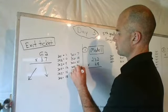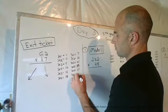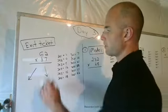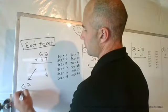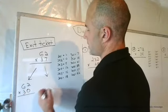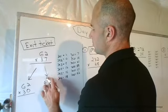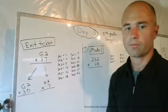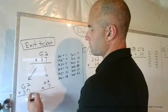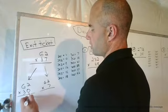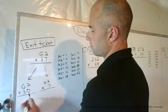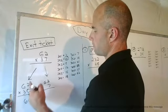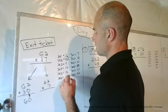So 62 times 37, I'm going to expand it and do 62 times 30 and 62 times 7. And then I'm going to do 62 times 30 first. Bring down the zero, three times two is six, and three times six is 18.